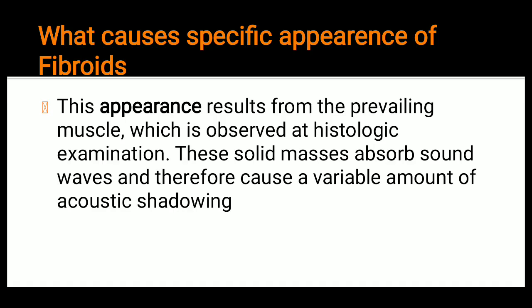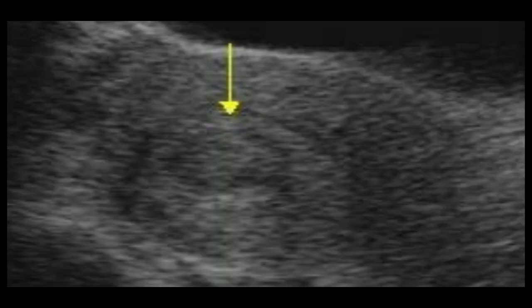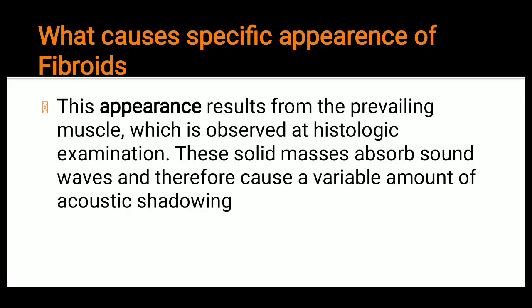Another question that usually arises is: what causes the specific appearance of the fibroid? The uterine fibroid presents as a concentric solid hypoechoic mass. Why is there a hypoechoic appearance? The answer is that it results from prevailing muscle bundles, which is observed at histological examination — the muscle arrangement is not directly observed on ultrasound.